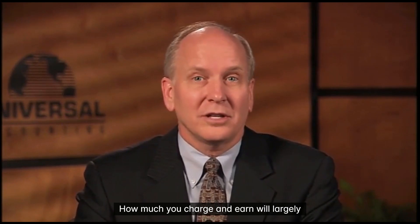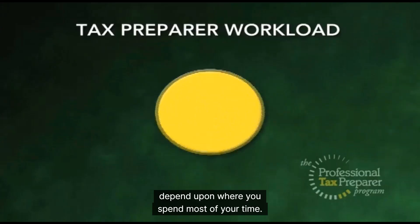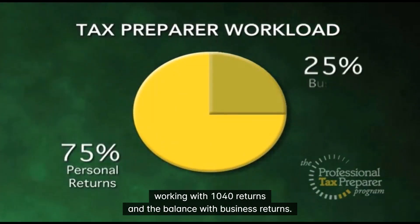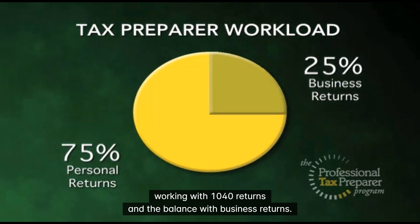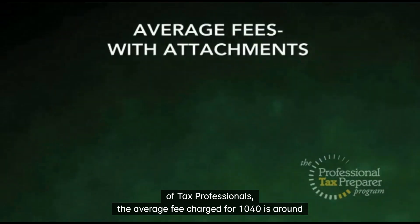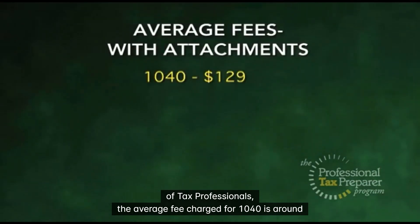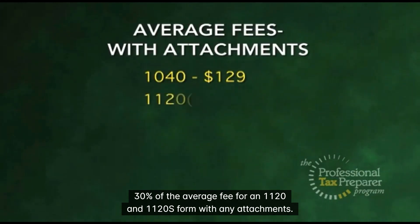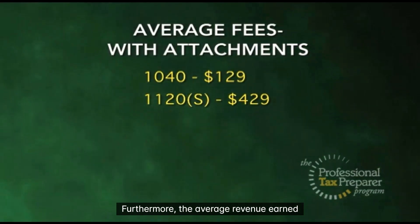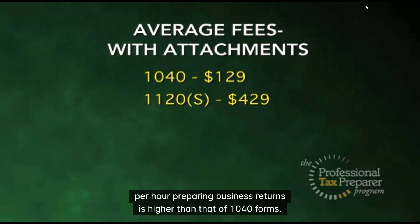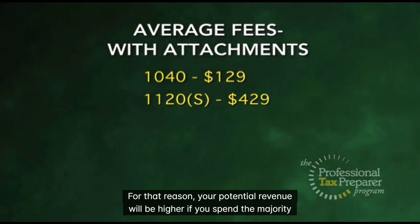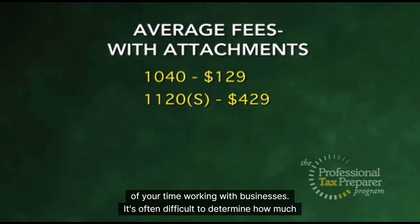How much you charge and earn will largely depend upon where you spend most of your time. If you're like most preparers, about 75% of your time will be spent working with 1040 returns and the balance with business returns. According to a recent survey published by the National Association of Tax Professionals, the average fee charged for 1040 is around 30% of the average fee for an 1120 and 1120ES form with any attachments. Furthermore, the average revenue earned per hour preparing business returns is higher than that of 1040 forms. For that reason, your potential revenue will be higher if you spend the majority of your time working with businesses.